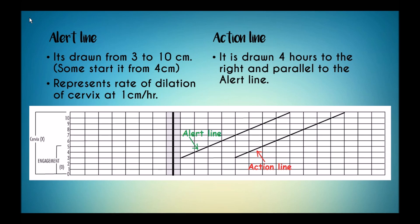In the part of the graph which records the cervix, there are two parallel lines drawn: one is the alert line and another the action line. The alert line is drawn from 3 to 10 cm, but in some graphs it may start from 4 cm. The slope represents the rate of dilation of cervix at 1 cm per hour.